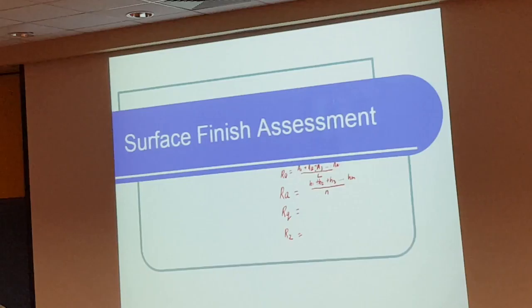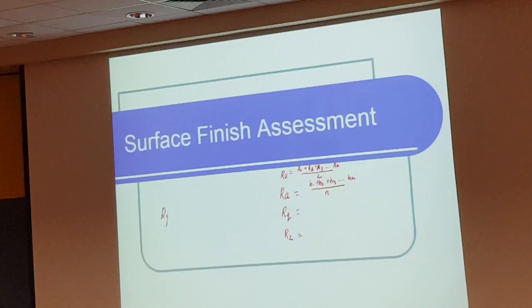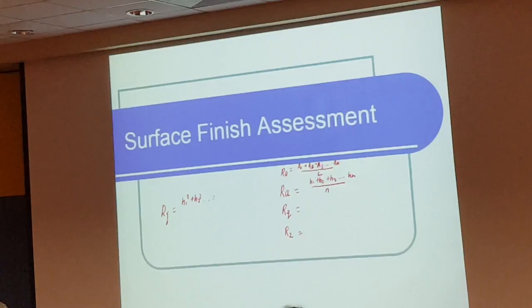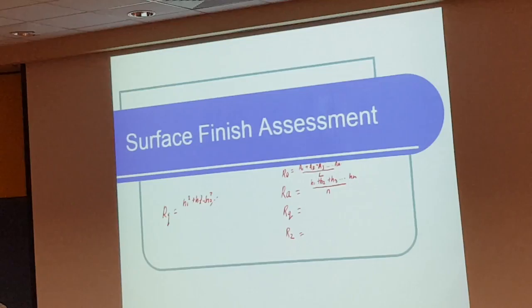Another method - Ra can be calculated this way: area one plus sum of all the areas, area two, area three, and so on up to area n, divided by the evaluation length.